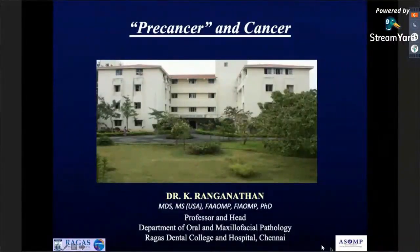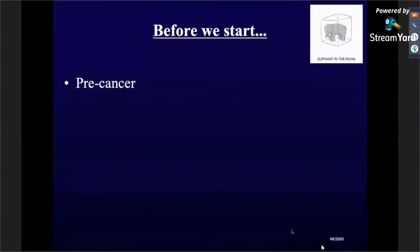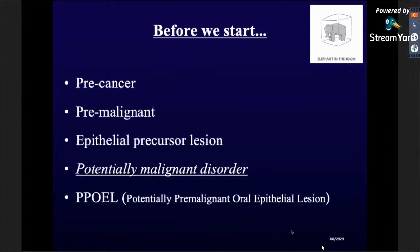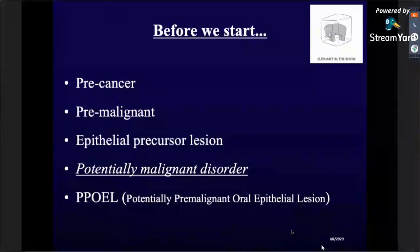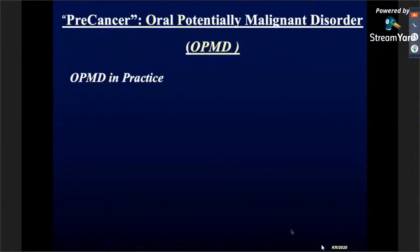So without further delay, let me start my presentation. Let's first talk about the so-called elephant in the room — we're going to talk about pre-cancer and cancer. There are a lot of terms used as a substitute for pre-cancer: pre-malignant, epithelial precursor lesions, potentially malignant disorders, and potentially pre-malignant oral epithelial lesions. These all essentially mean pre-cancer. I'm going to use the term potentially malignant disorder, or more specifically, oral potentially malignant disorder, in this presentation.